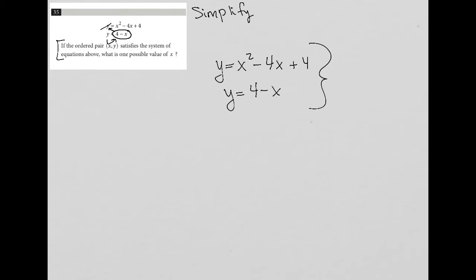Which means I can replace this Y and say, well, that means that four minus X is equal to X squared minus four X plus four. This is just substitution. We could have done substitution in another way, but we know the question is asking us for X. So this is a way to get rid of Y completely.